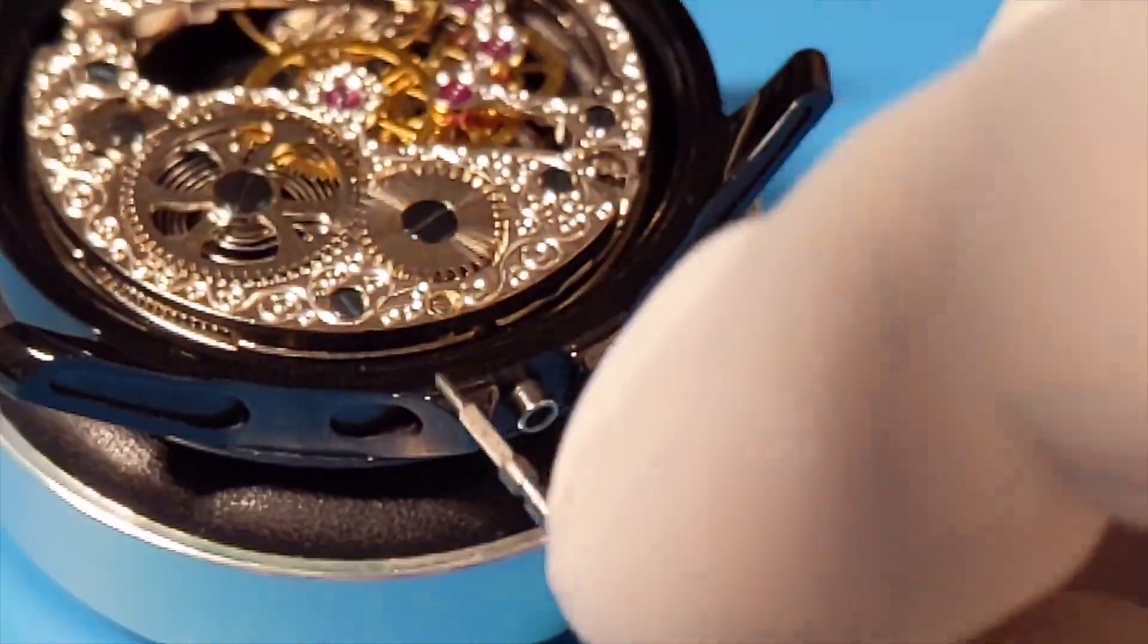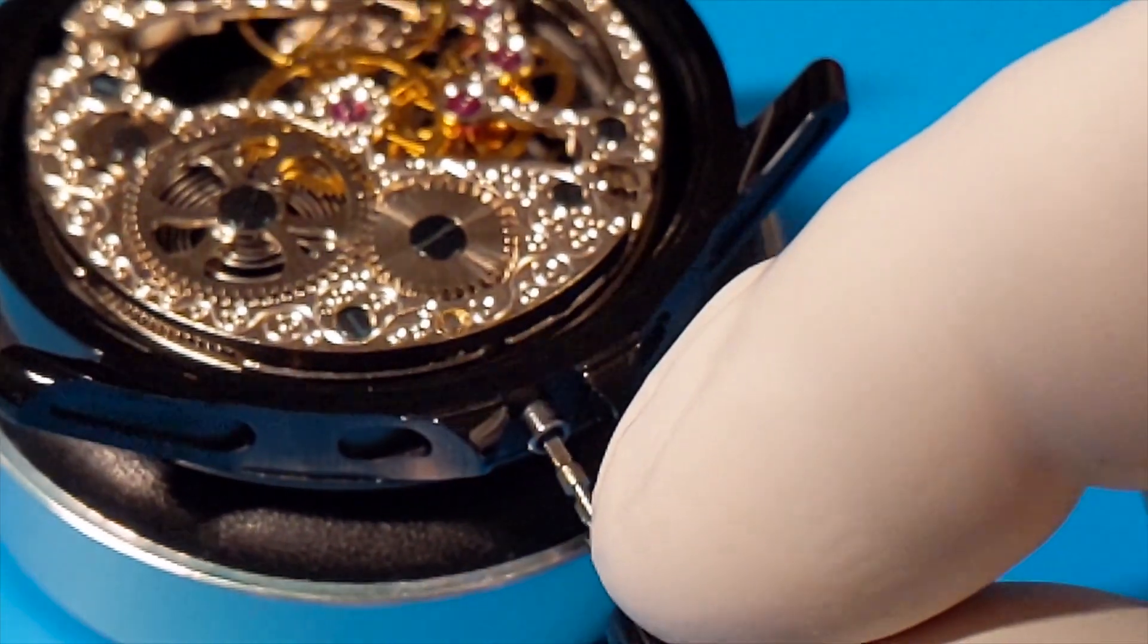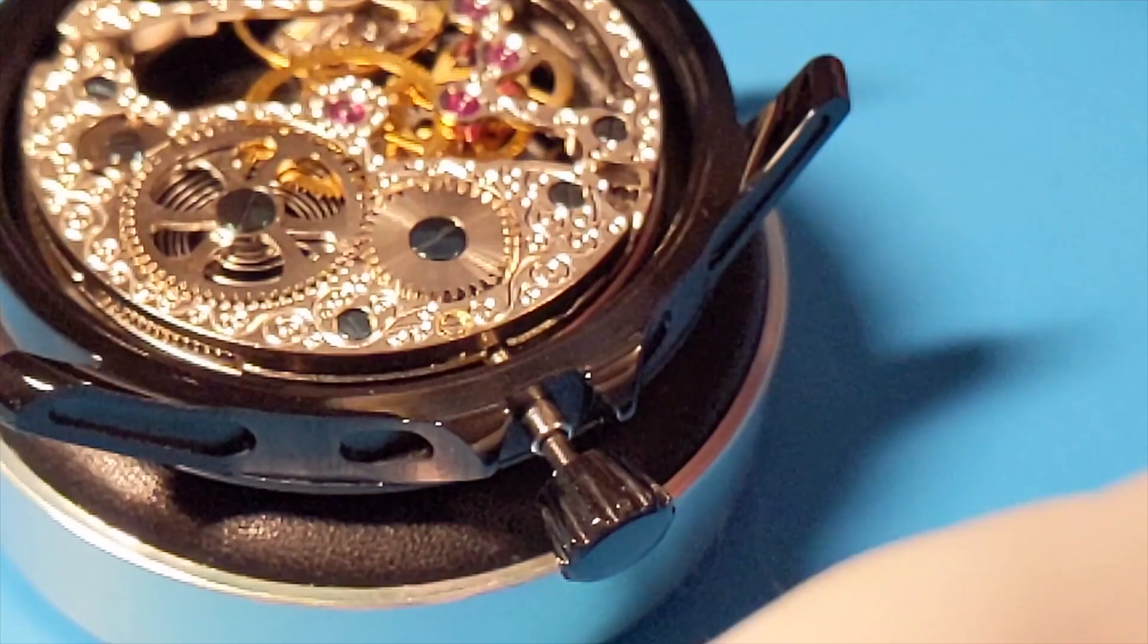We need to cut and file the stem that comes with the movement so we can make it fit with the custom crown.